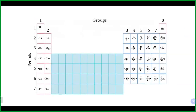Here's an example of Lewis dot symbols for all the elements. You can see everybody in group one has one, group two has two, then three, four, five, six, seven. Group eight has the maximum. One exception is helium — helium is a member of group eight but only has two valence electrons. If we wrote the electron configuration for helium, it's atomic number 2, so its configuration is 1s2 — it only has two electrons and can't have eight. Everybody else in group eight will have eight valence electrons.